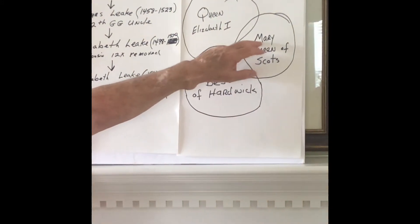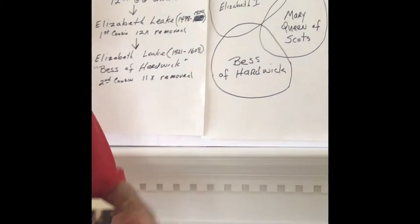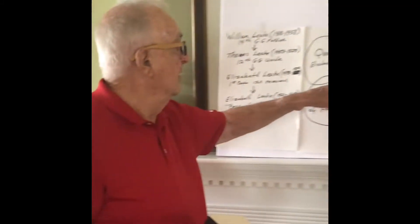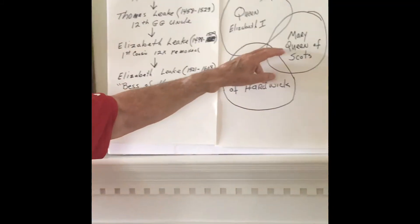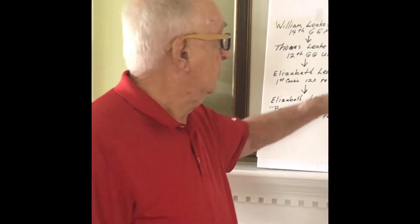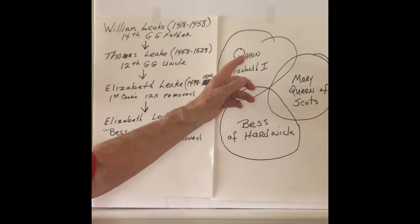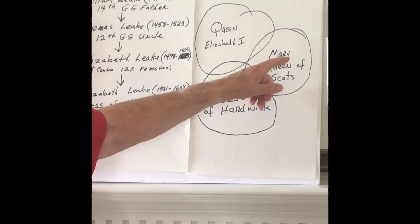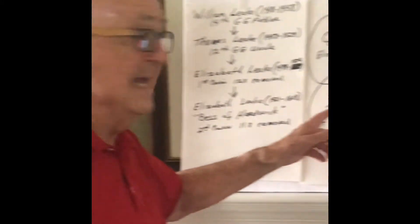Bess is also very involved with Mary, Queen of Scotland. Mary, Queen of Scotland was dethroned because of a lot of different stories. She even claimed that she was also the Queen of England. When she had to escape Scotland, she came to England. Of course, Queen Elizabeth I was very dubious of Mary — she was a threat. So Queen Elizabeth had her arrested and under house arrest. And you know who? Mary, Queen of Scotland, was in the home for 15 years under house arrest — you guessed it — Bess of Hardwick.